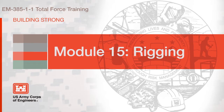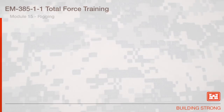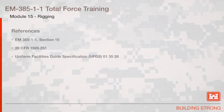Section 15: Rigging. The references for this section are EM 385, TAC 1, Section 15, 29 CFR 1926.251, and the Uniform Facilities Guide Specification 01-35-26.